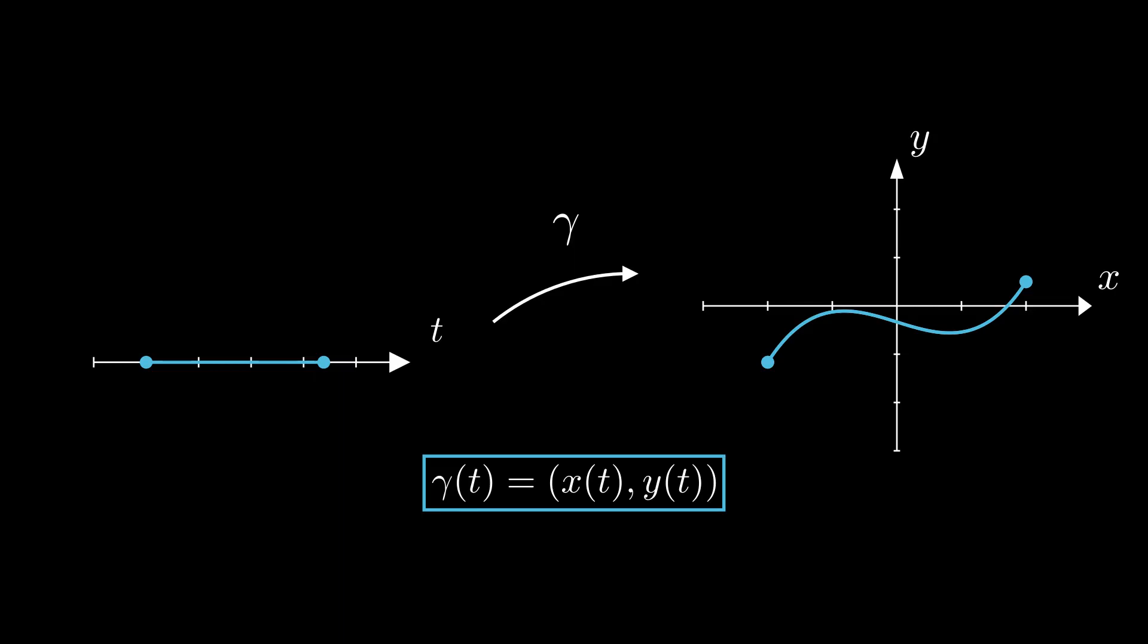We sometimes call the image of gamma the curve, and gamma the parametrization of the curve. At the end of the day, if you go out to the street and ask the first person you see what is a curve, the answer won't be, oh, obviously, a continuous function from a real interval into the plane.